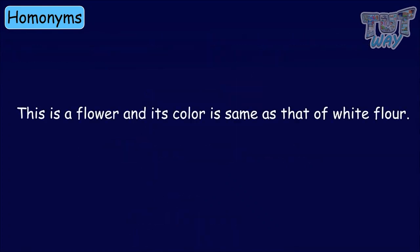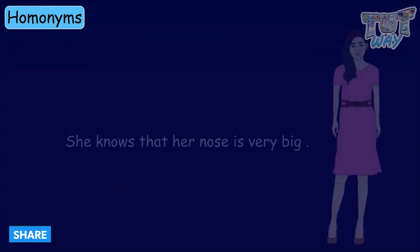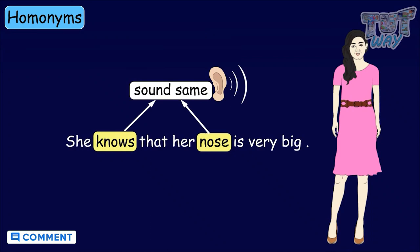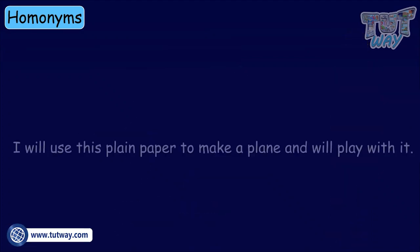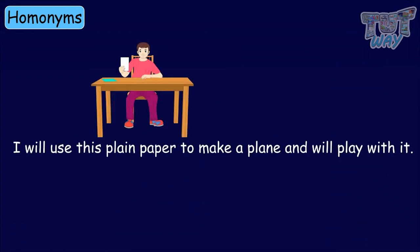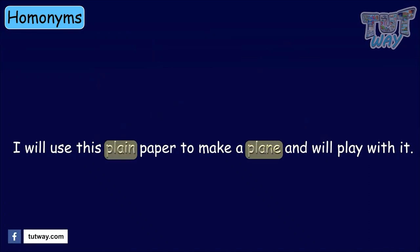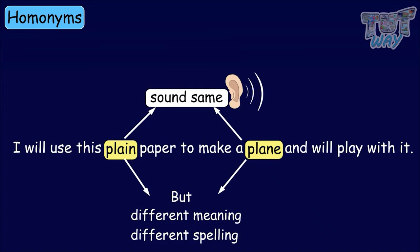This is a flower, and its color is the same as that of a white flour. Flower and flour are homonyms. She knows that her nose is very big — know and nose are two words that sound similar but mean different and are spelled differently. I will use this plain paper to make a plane and will play with it — again, two words that sound similar but have different meanings and are spelled differently.